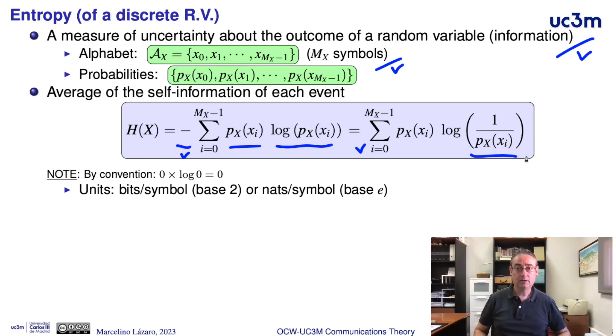The base of the logarithm defines the units. The most common base is base 2, in this case we have bits per symbol. This is the most frequent base used in digital communication systems. Another alternative is the Euler number as a base, then we have natural logarithms, and in this case the units are nats per symbol. But here by default we will choose base 2, bits per symbol.